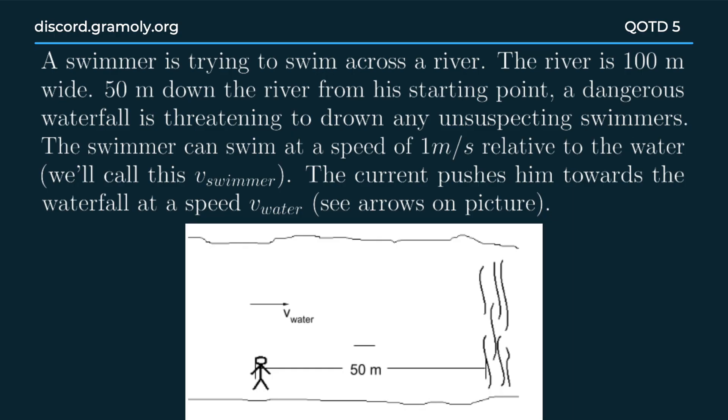A swimmer is trying to swim across a river. The river is 100 meters wide, but 50 meters down the river from his starting point, a dangerous waterfall is threatening to drown any unsuspecting swimmers.